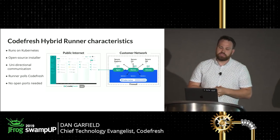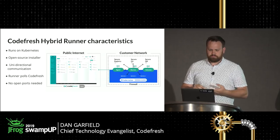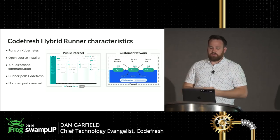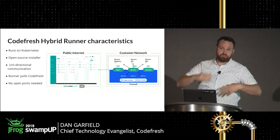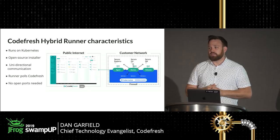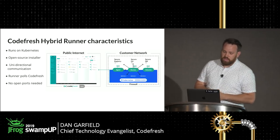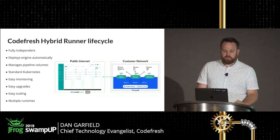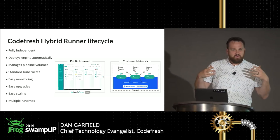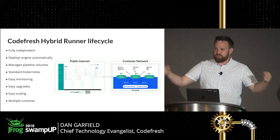The runner runs on Kubernetes, which means it has all the built-in advantages: it's reliable, it's scalable. Every time it runs a pipeline, it spins up new pods, so it can scale up and handle thousands of builds. It uses an open source installer so you can grab it and try it out right now. It's only unidirectional — it never gets pushed to, it always pulls what it needs. This solves 90% of the networking challenges people have with hybrid, and no open ports are needed.